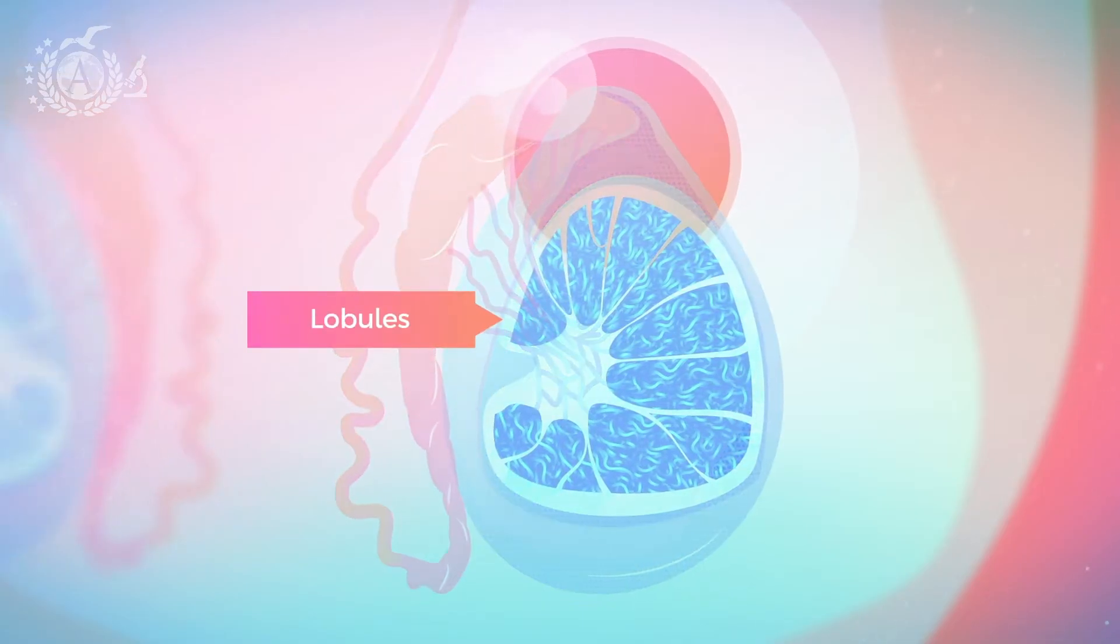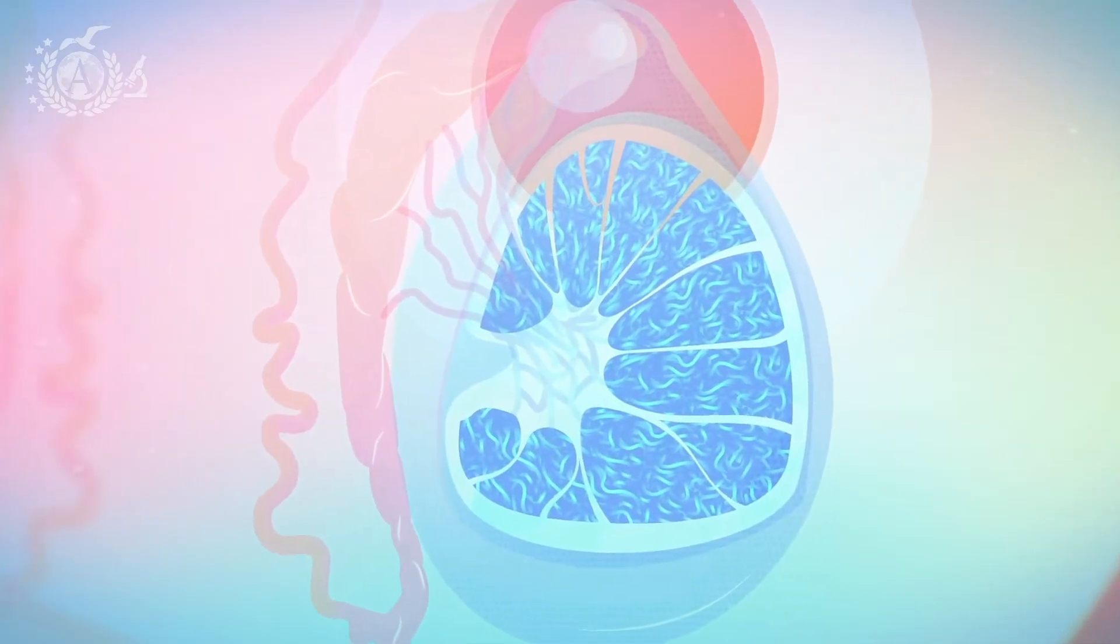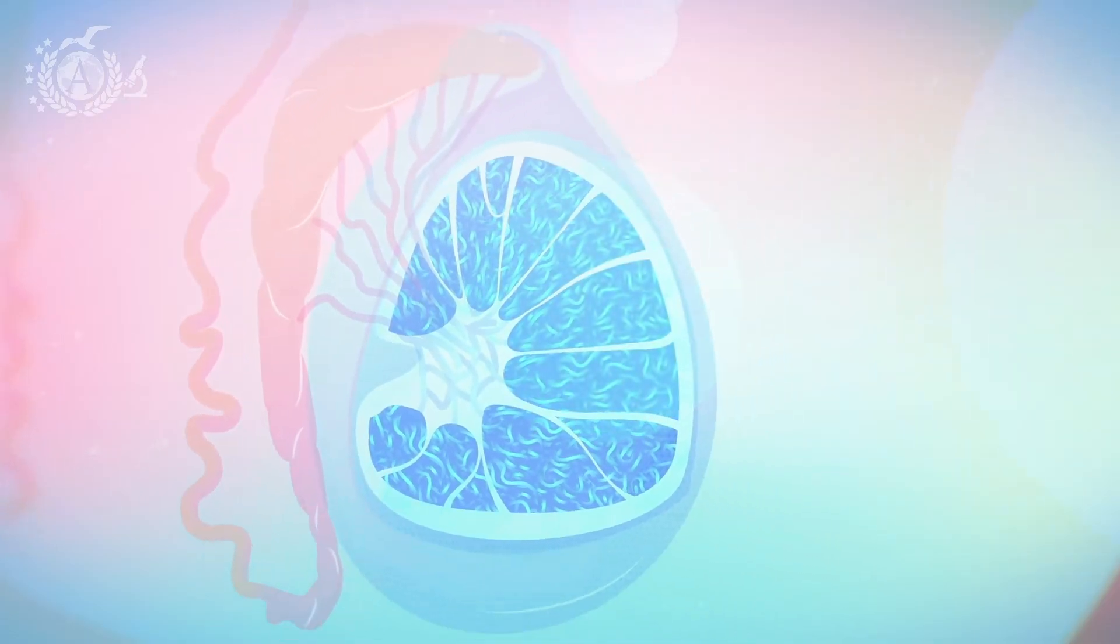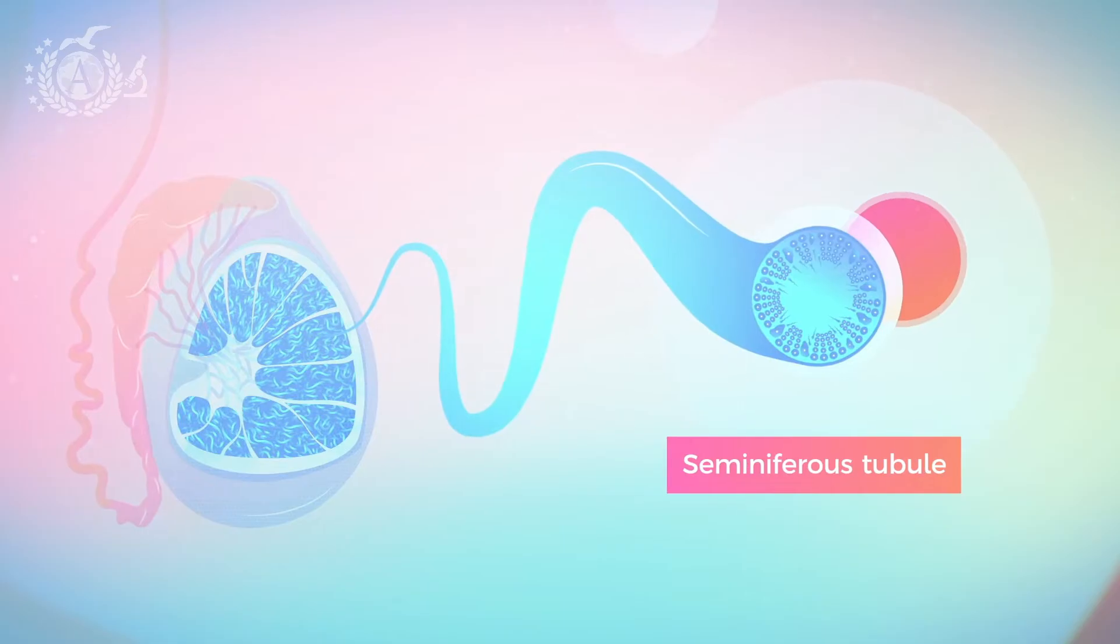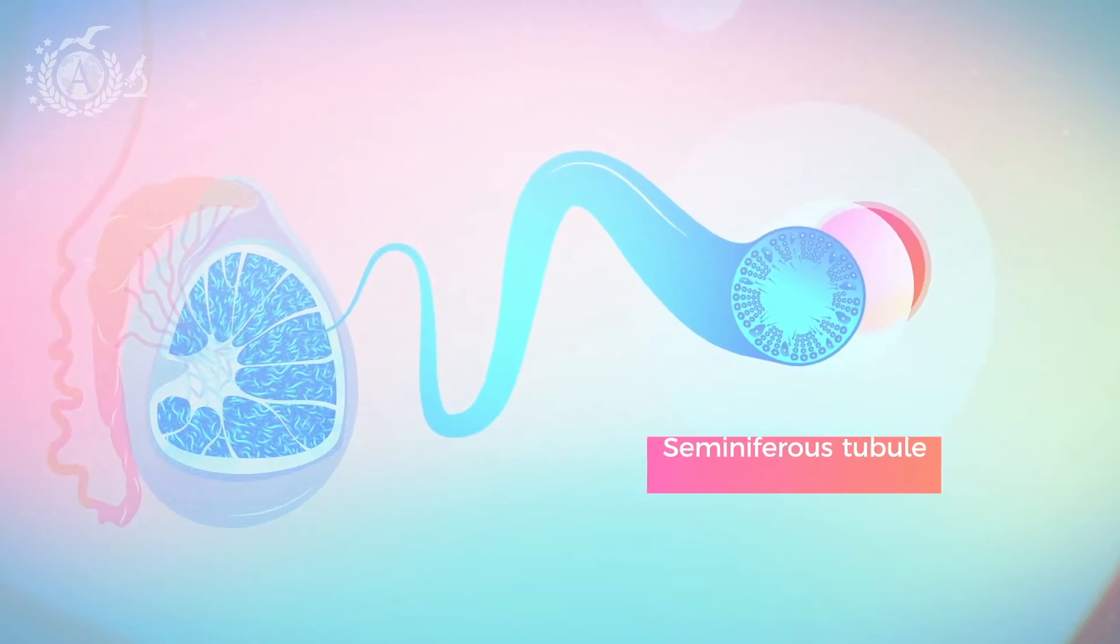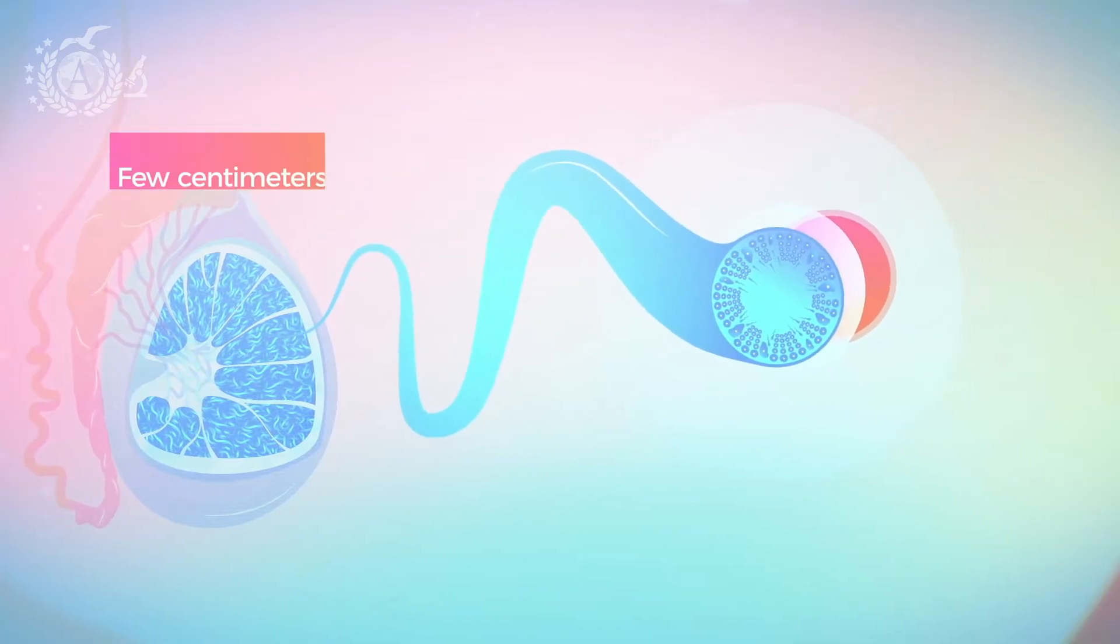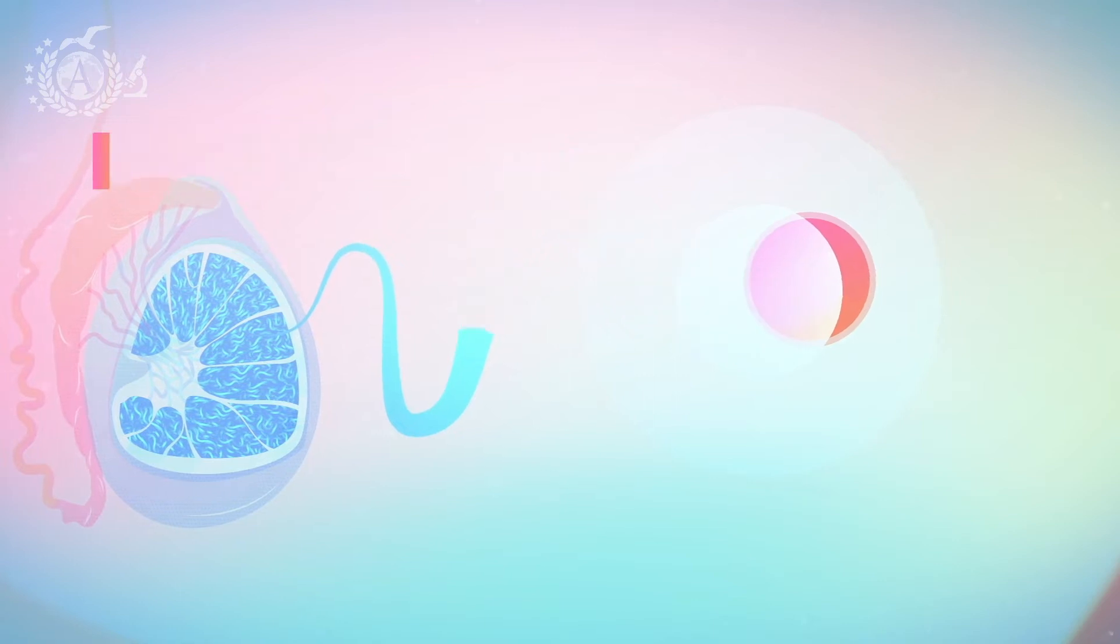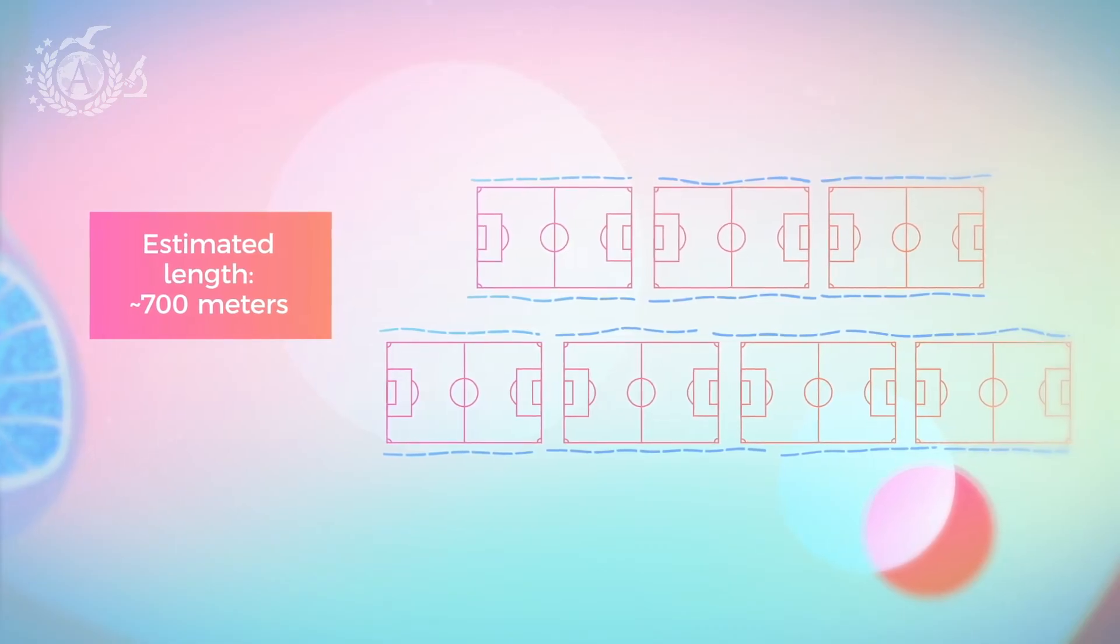Each lobule, in turn, is filled with blind tubular structures, the seminiferous tubules varying in number from 1 to 4, which, for reasons of space, fold in on themselves. But this folding shouldn't be underestimated, because although the whole system of tubules covers a few centimeters of space, the entire length of all the distended seminiferous tubules covers an area that is equal to approximately 7 football fields.